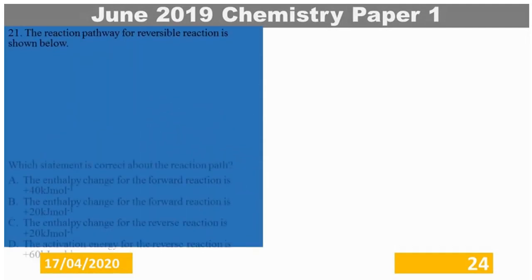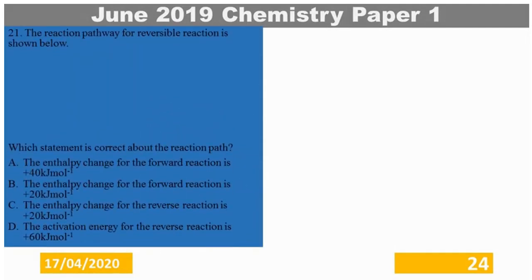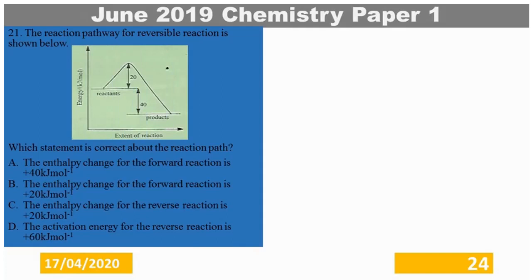Question 21 gives the reaction profile of a reversible reaction. Given a profile such as this, we realize that this would be the forward reaction and this would be the backward reaction. The energy gap between the reactants and the product is the enthalpy change of that reaction.